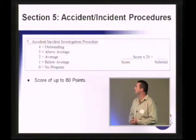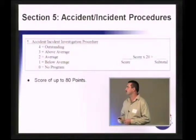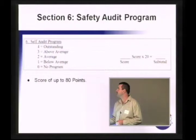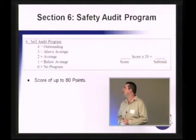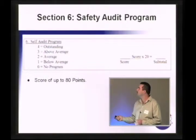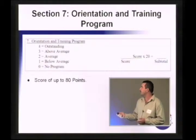Section 5, accident incident procedures. Same thing. Possible high scores of 4 for outstanding, 3 above average. Score max is 80 points. Section 6, safety audit program. Same thing. Max score, 80 points. Orientation and training program. Max score, 80 points.